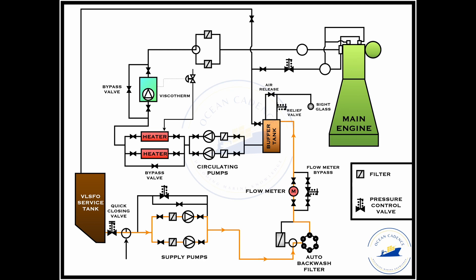Now the circulating pump picks up this fuel from the buffer tank and builds up further pressure and then supplies it to the heater. Usually the circulating pump would build up a pressure of around 7 to 8 bar before circulating the fuel further into the circuit. This fuel then enters the heaters and then gets heated further.